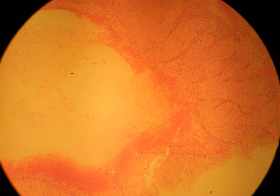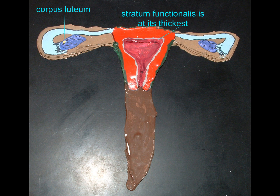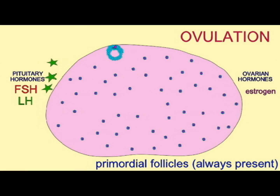In the maturing follicle, substances in the follicular fluid inhibit this process, which then occurs after the follicle ruptures. These cells then form the small and large luteal cells, with the follicular cells forming the larger cells and the thecal cells forming the smaller cells, which then metabolize cholesterol to produce androgens, and from these androgens to produce progesterone instead of estrogen.